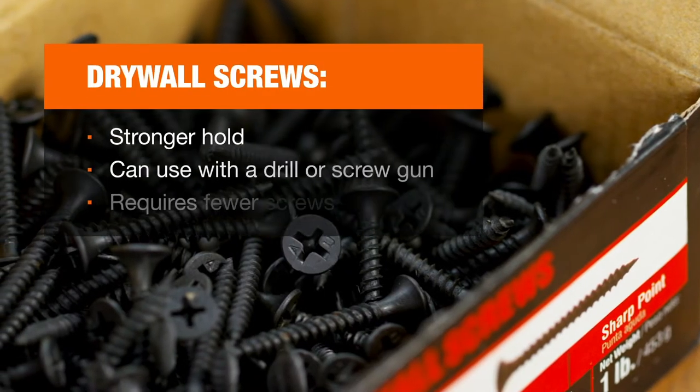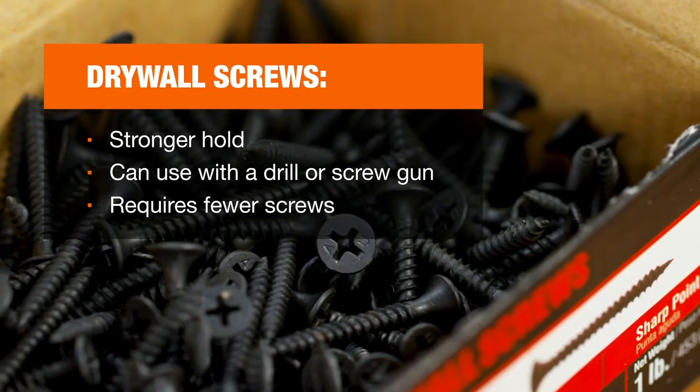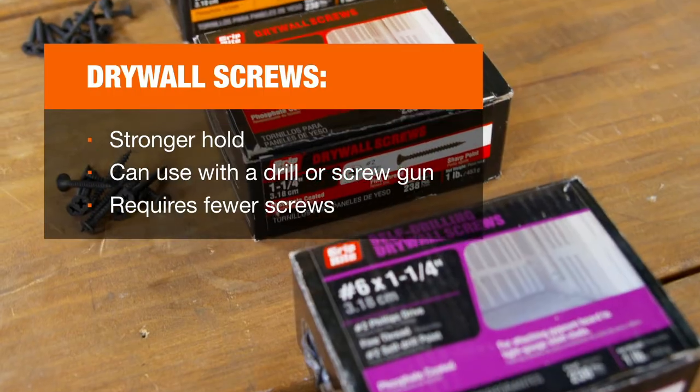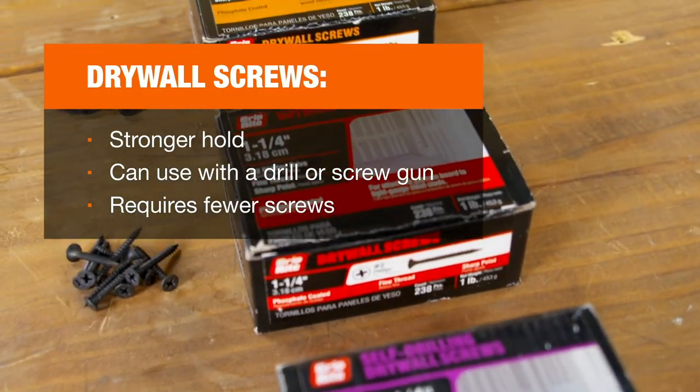Drywall screws provide a stronger hold than drywall nails and can be fastened with a drill or electric screw gun. Drywall installation also requires fewer screws than nails.